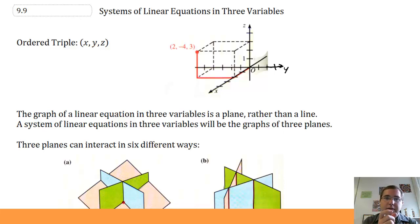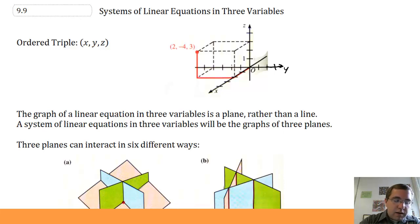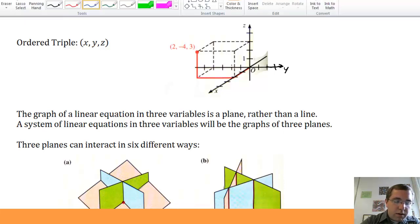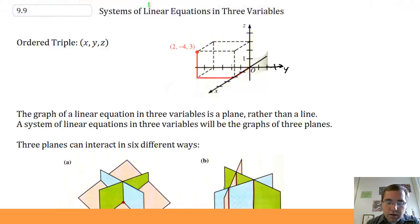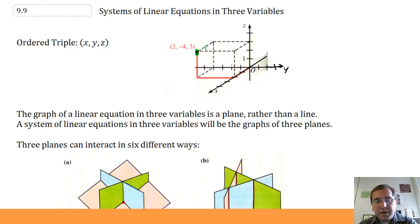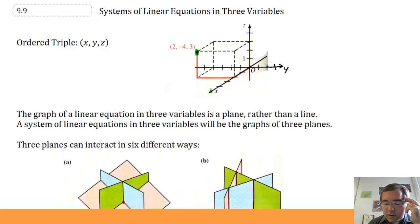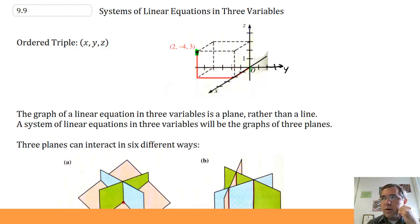The x value, the y value, the z value. When we plot these points, we plot them in three dimensions. You'll see the x-axis right there, the y-axis horizontally there, and the z-axis is vertical. They meet at a common point, the origin.